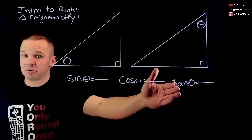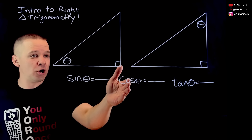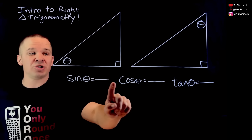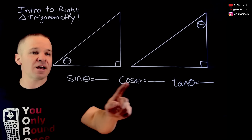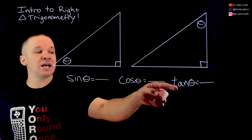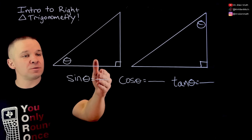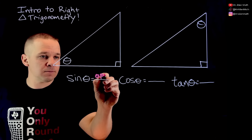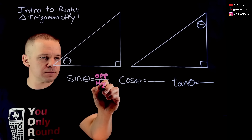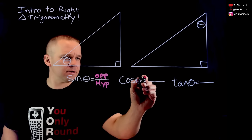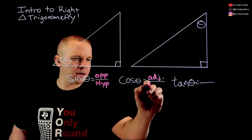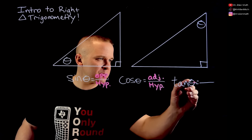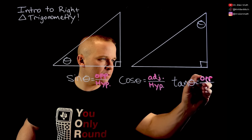We've got three different interesting things here: sine of theta, cosine of theta, and tangent of theta. Those are three-letter abbreviations — it's not 'sin, cos, tan,' it's sine of theta, cosine of theta, tangent of theta. And these equal some ratios. The ratio for sine is the opposite side over the hypotenuse, cosine is adjacent over hypotenuse, and tangent is opposite over the adjacent.